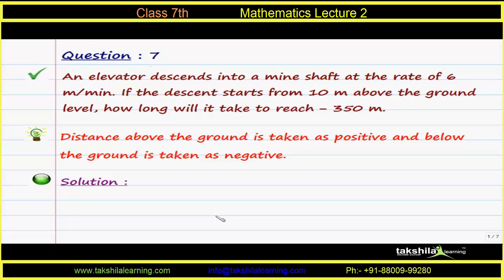In question number seven, an elevator descends into a mine shaft at the rate of 6 meters per minute. The descent starts from 10 meters above the ground level. How long will it take to reach minus 350 meters — that is, a depth of 350 meters below the ground?